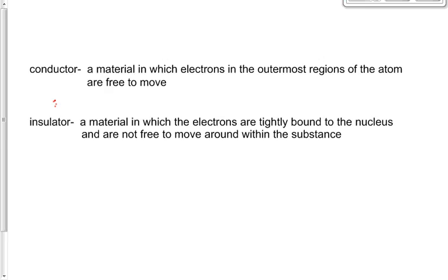Even insulators will conduct electricity to some degree. Air is usually a pretty good insulator, but when there's a rainstorm, clouds and water molecules rub together — and what happens? We get lightning. Air is not a great conductor, but lightning can still conduct through the air to the ground. It tends to happen when it rains because water is a pretty good conductor — the moisture in the air makes it a better conductor. We'd still say air is a good insulator, but there are varying degrees.